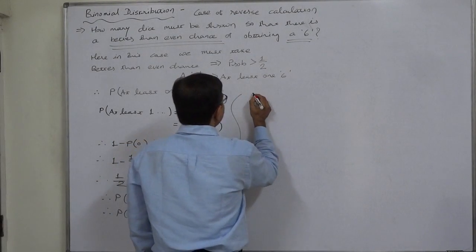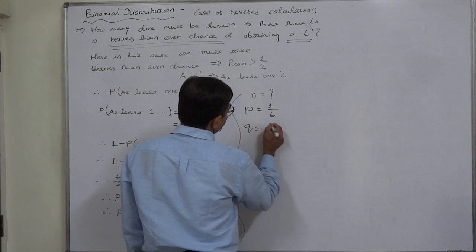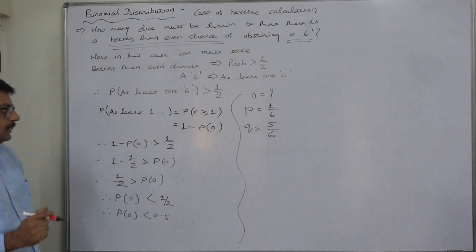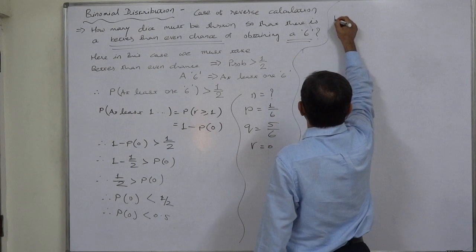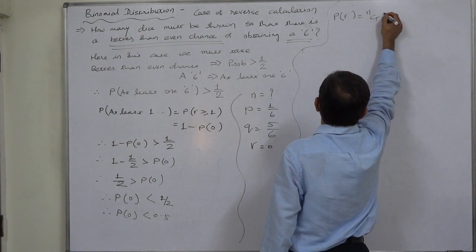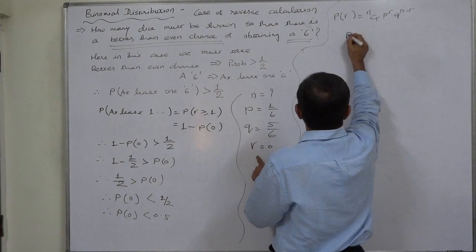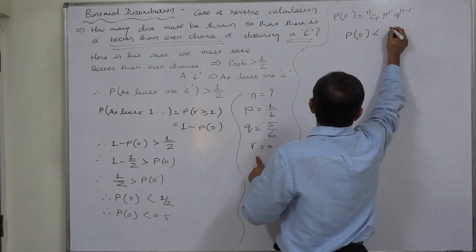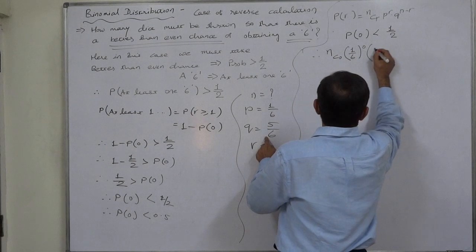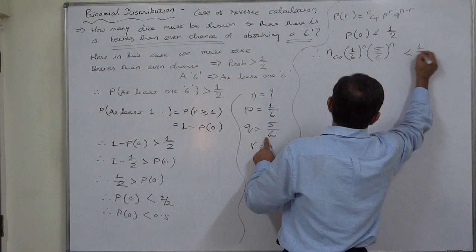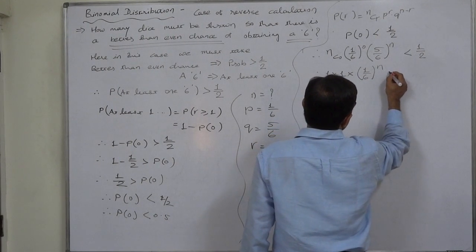This is the case of a cubical die. In the case of a cubical die, the probability of getting a 6 is 1/6, and the probability of not getting a 6 is 5/6. Here R is 0. Using the formula of binomial distribution — P(R successes) = nCr × p^r × q^(n−r) — and substituting P(0) < 0.5, we get: nC0 × (1/6)^0 × (5/6)^n < 1/2. Since nC0 = 1 and anything raised to 0 is 1, this simplifies to (5/6)^n < 0.5.